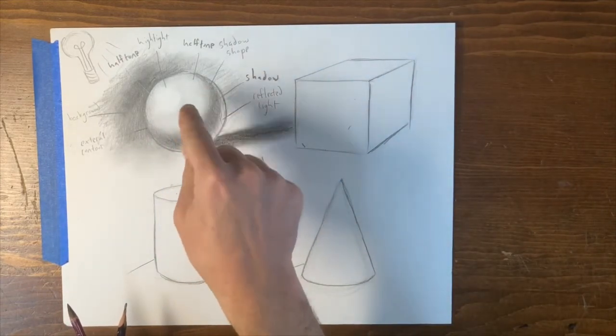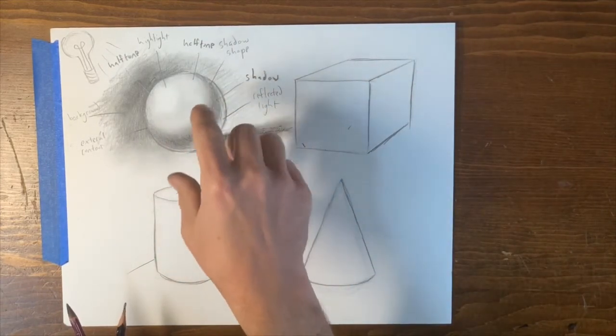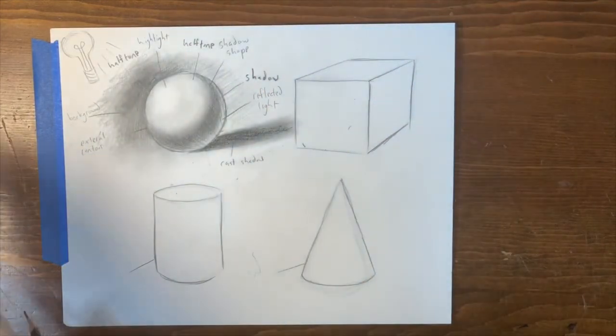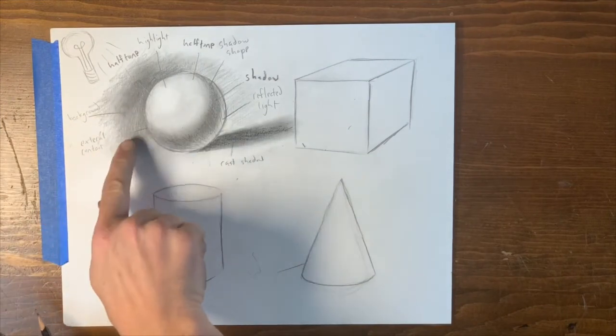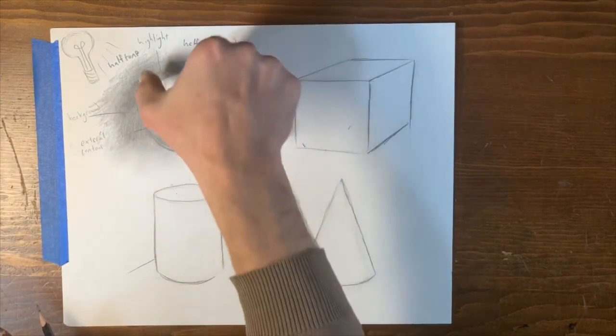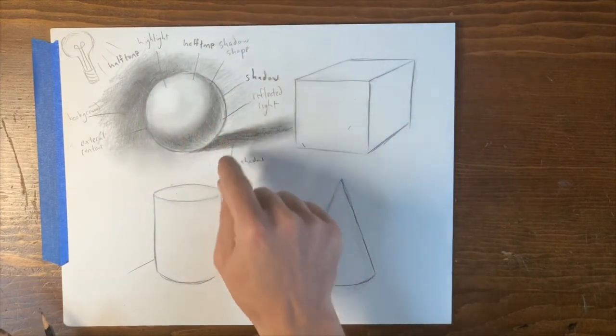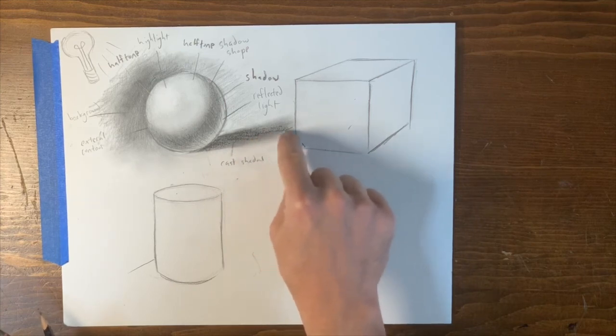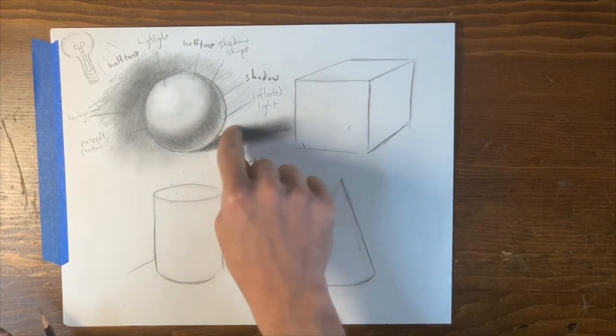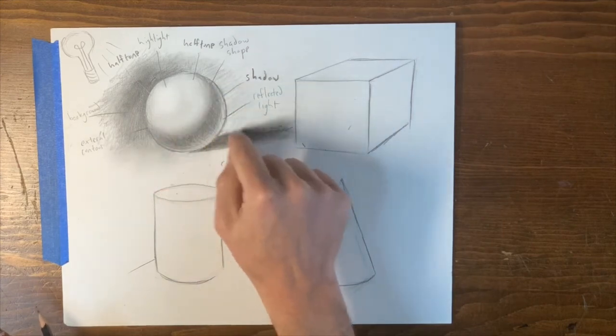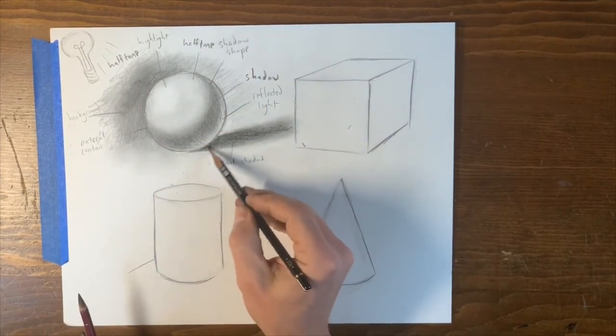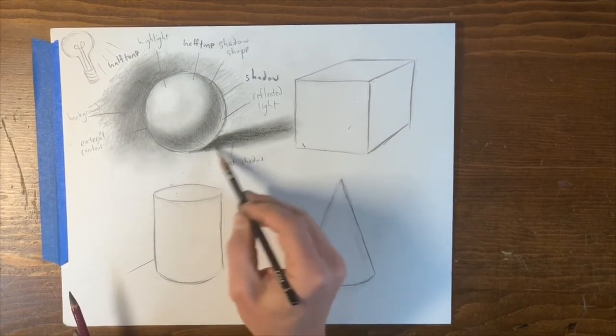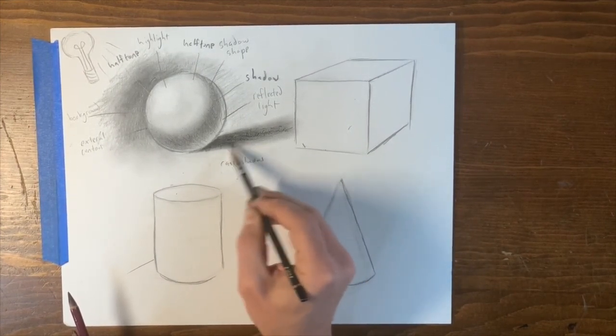But Leonardo da Vinci was also exploring the parallels between the world of light, in my opinion, he's exploring this, and the world of water. Again, both travel in waves. Think of this, in another way of thinking, think of this as being a tree in a stream. Water is hitting that tree, and it's going around it. This is blocking the flow of that.